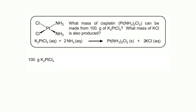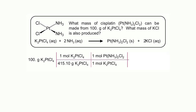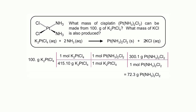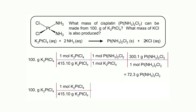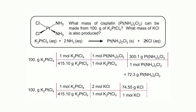What we've effectively done in this calculation is the following: we started with 100 grams of the reagent, converted that into moles of the reagent, then into moles of cisplatin, and then into grams of cisplatin — finding 72.3 grams of cisplatin. We did the same for potassium chloride: starting with grams of the reagent, converting to moles of the reagent, multiplying by the mole ratio to get moles of potassium chloride, and then converting to grams to find 35.9 grams of potassium chloride.